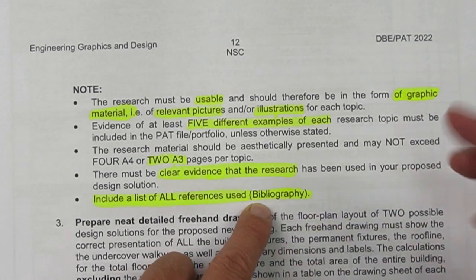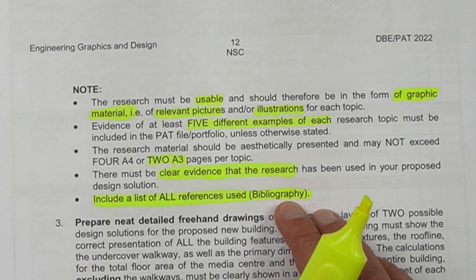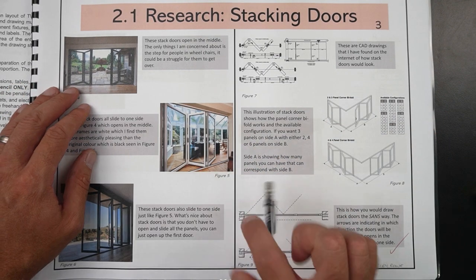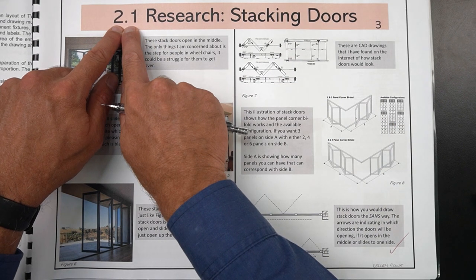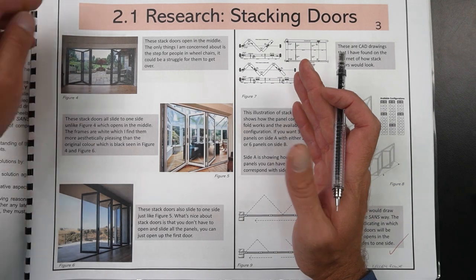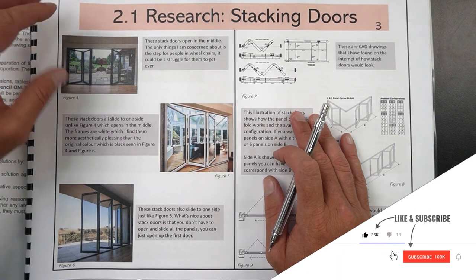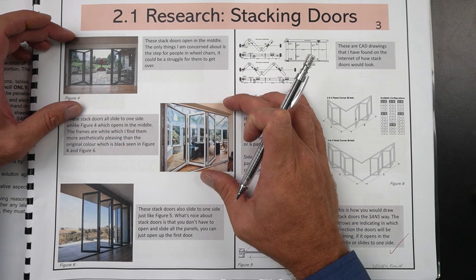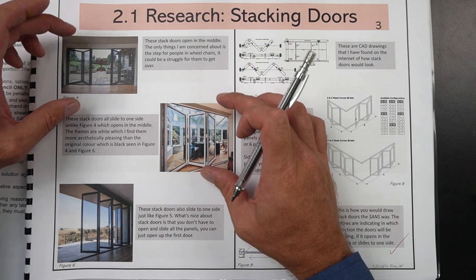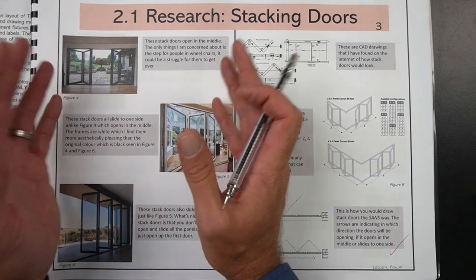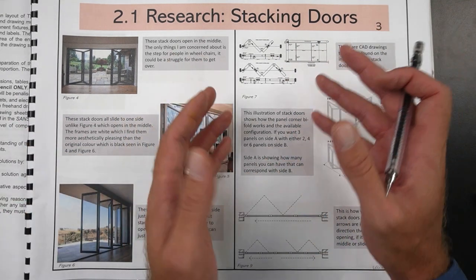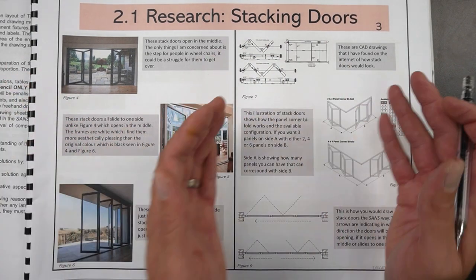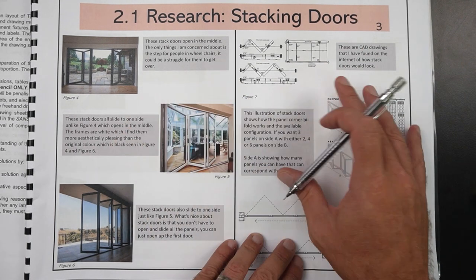Let's look at some examples from previous years. This example is very visual with lots of pictures, and it's clearly indicated what the research is about. The section number 2.1 corresponds with the actual checklist — yours should be exactly the same. Make sure you use graphic material; this example has almost too much writing. You need five different types of design for the visual 'look' part, and on the other side you need illustrations showing the layouts — almost engineering drawings of those elements — so both the design aesthetic and the engineering detail must be visible.